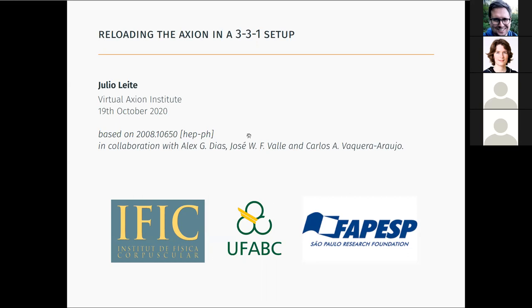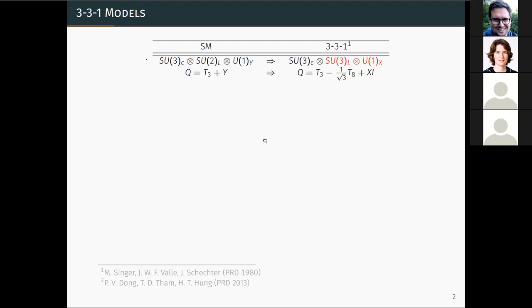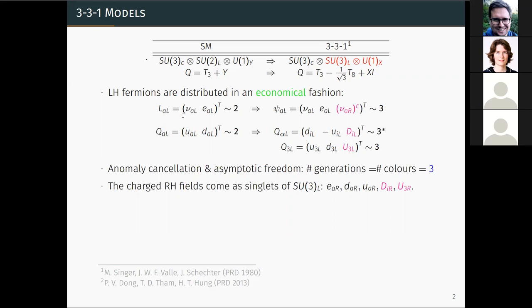So I will talk about reloading the axion in a 3-3-1 setup. So first of all, I need to tell you what I mean by a 3-3-1 setup. 3-3-1 models are gauge extensions of the electroweak sector of the standard model. So instead of SU(2) cross U(1), what we have now is SU(3) cross U(1), and the electric charge is given by this operator over here. The three lepton doublets of the standard model are then promoted to triplets in the fundamental representation of SU(3)_L. And in order to complete the representation, we need to add a new field, which in this case is precisely the right-handed neutrino or the conjugate of it.